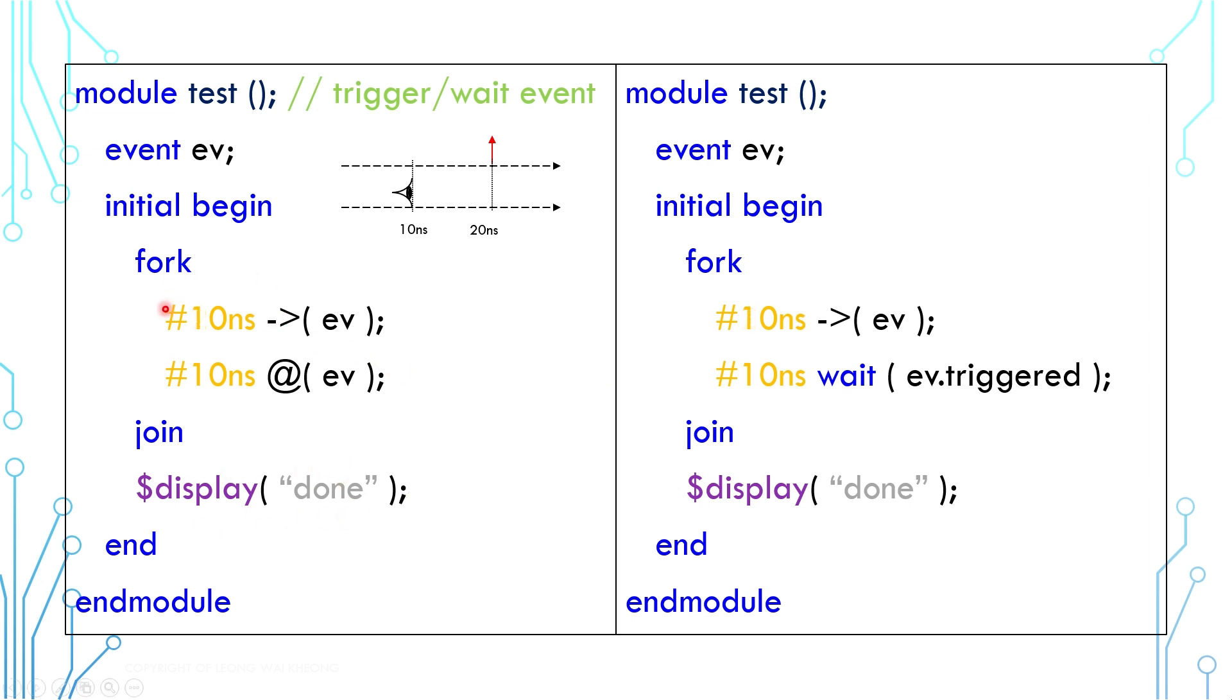Now this is the interesting one when blocking and triggering happen at the same time. In this case, @ cares about precedence. If trigger happens first and blocking happens later, then the blocking will not see the trigger. Whereas if blocking happens first and trigger happens later, then the blocking can see the trigger.